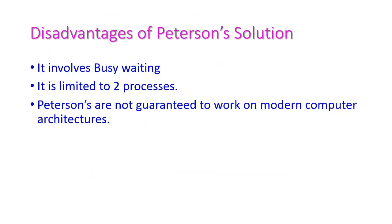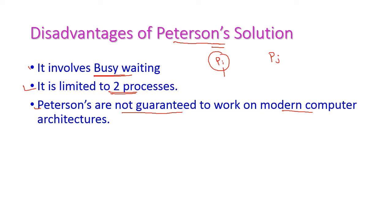The disadvantages of the Peterson solution are: first, it involves busy waiting — if pi enters the critical section and executes it, then pj is busily waiting to enter. Second, it is limited to only two processes; if there are more processes, the Peterson solution will not give the proper solution. Third, the Peterson solution does not guarantee to work on modern computer architectures, because more processes can try to access the critical section simultaneously in modern architectures, and therefore Peterson will not give the proper solution for modern architecture.